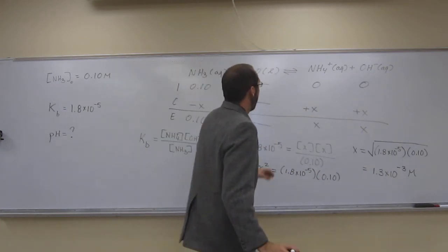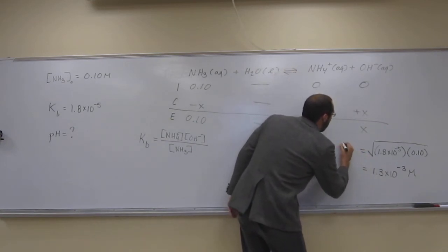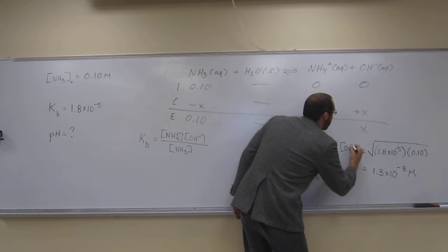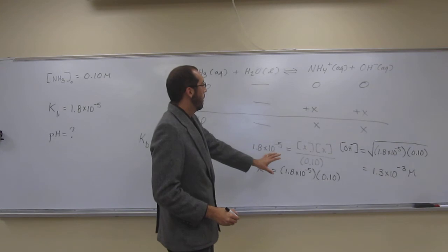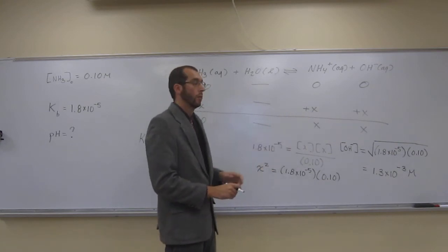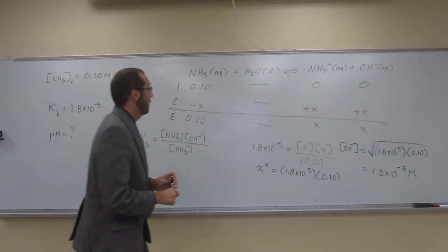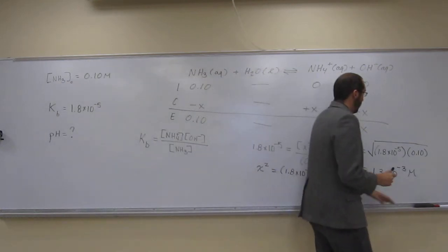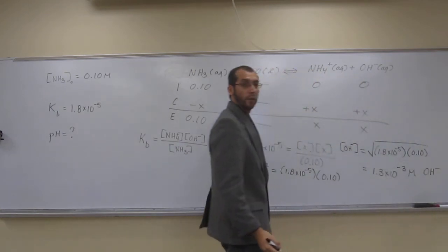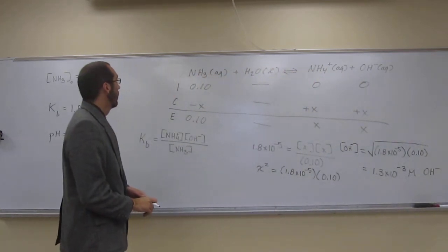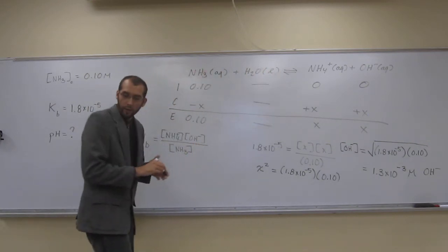So remember, X is equivalent to the OH minus concentration. And that's where we get the pH from. Is everybody set with what we've got here? So let's just say we've got 1.3 times 10 to the negative 3 molar OH. So I'm going to erase the top of this here so we can use that space to figure out the rest.